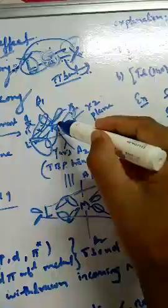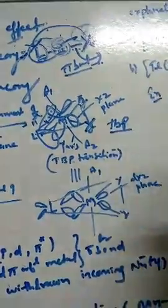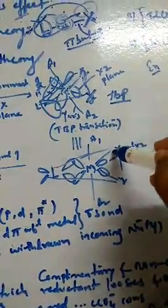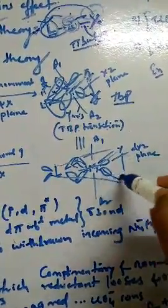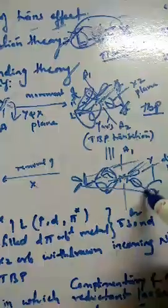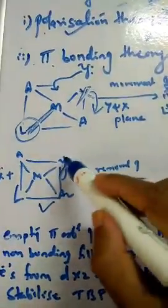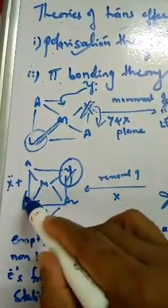The ligand has empty p, d, or pi-star orbitals that overlap with the non-bonding filled d-pi orbitals of the metal ion, becoming very stabilized. The electrons from the d-xz plane are withdrawn by this pi bond formation. Because of this electron withdrawal, there is easy leaving of the ligand X — X is displaced, and the incoming ligand Y is fixed in its place.